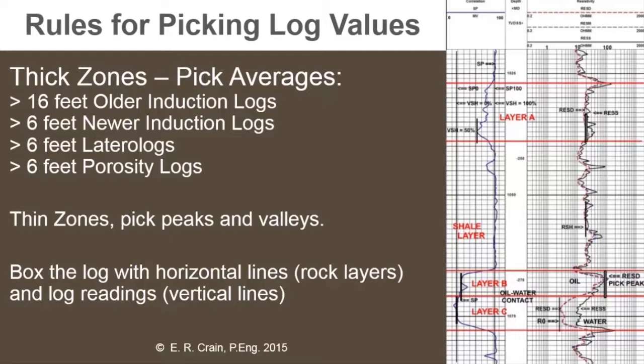On the illustration at the right of the screen, you'll see the log we're currently working on. This is the dual induction log for exercise number one. In Zone A, the zone is 40-odd feet thick — that's a thick zone — so we can pick all our logs by taking an average: resistivity, density, neutron, gamma ray. We can take an average value for those logs inside that interval.